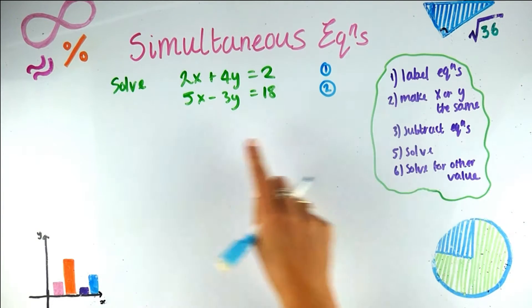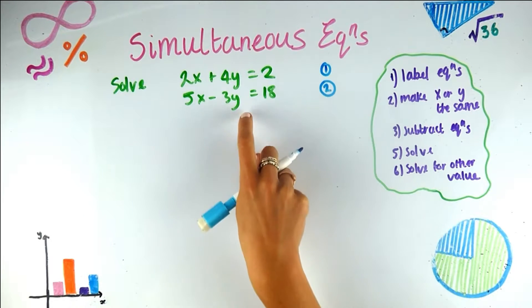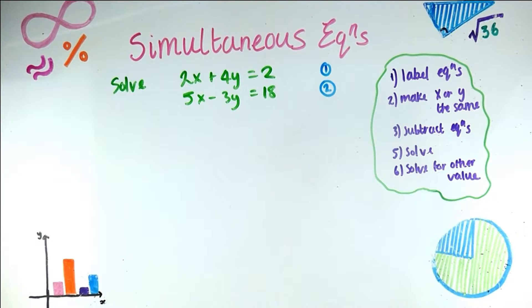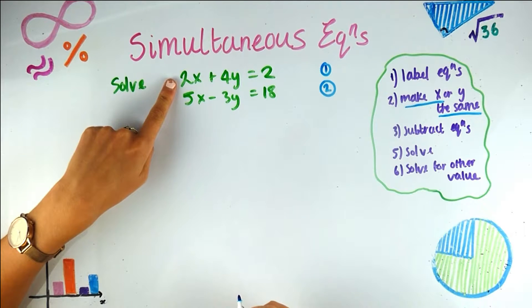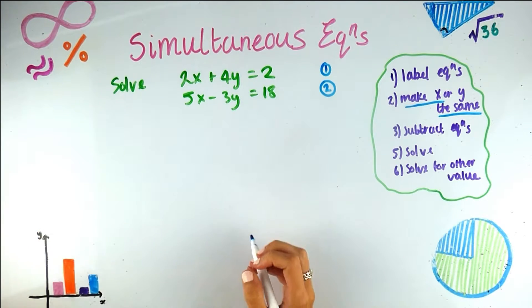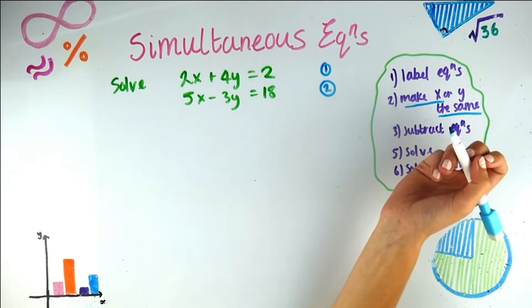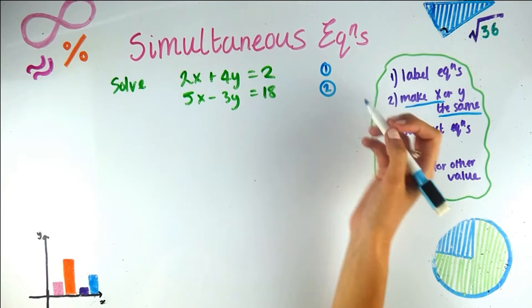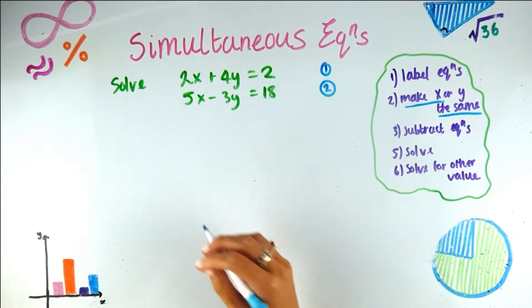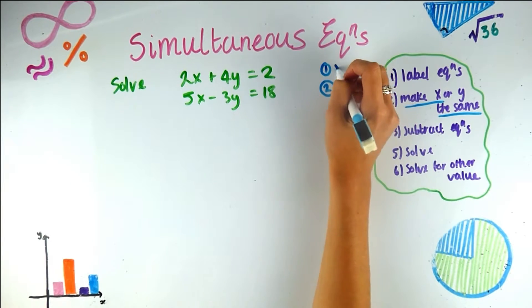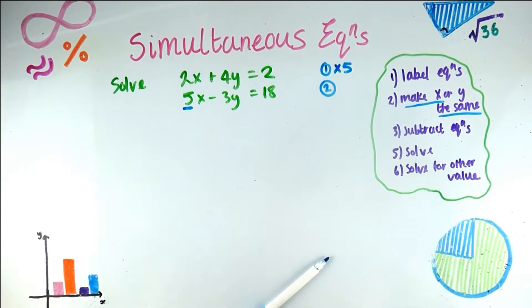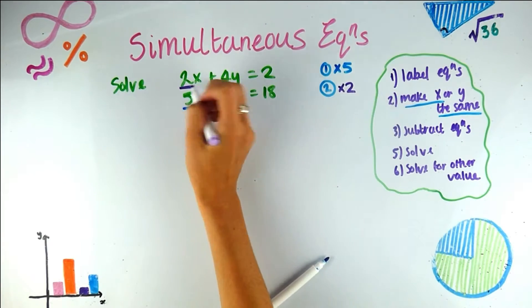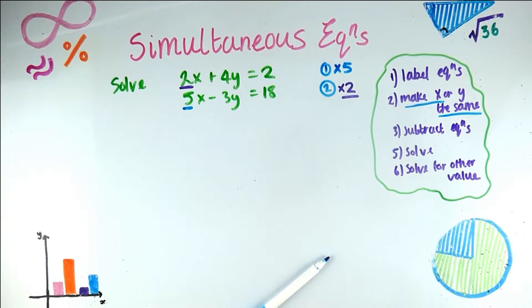Step two, make x or y the same. So as you can see here, we've got 2x, 5x, 4y minus 3y. So it's saying make one of them the same. Now I always make x the same. So we want x to be the same for equation 1 and in equation 2 and the way you do that is you multiply by the opposite coefficient of x in the different equation, which sounds really complicated to explain but very easy when you watch. So I'm going to multiply this whole equation, so equation 1 by 5, because of the 5 here, and I'm going to multiply equation 2 by 2 because of the 2 here. So that's step two, make x or y the same.